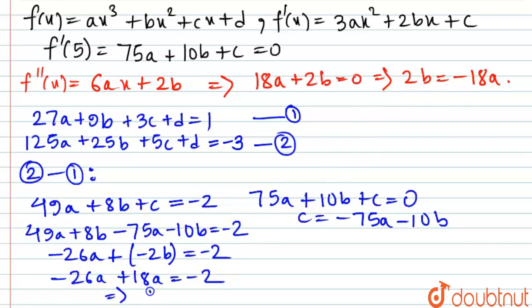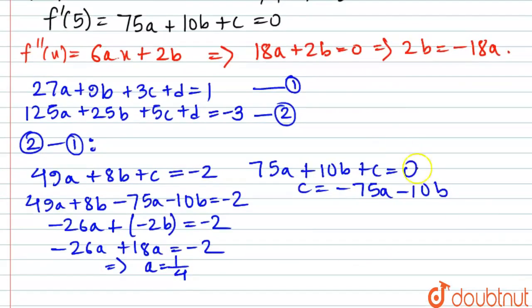So therefore -26a + 18a = -2, which is finally implying a to be 1/4. So a is basically 1/4.